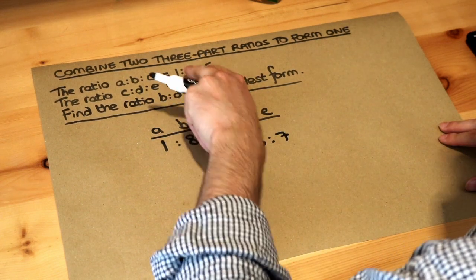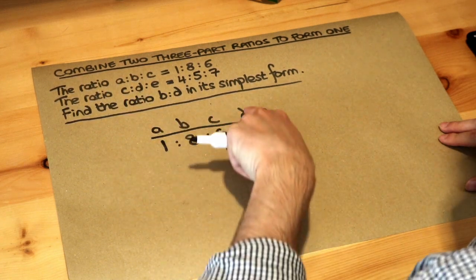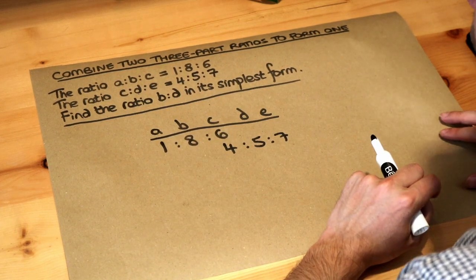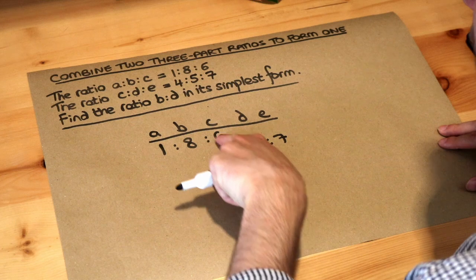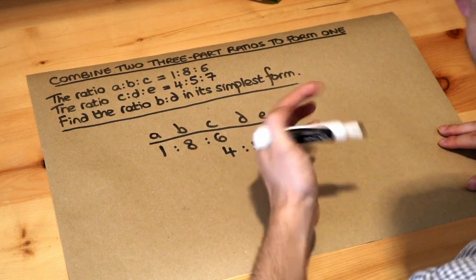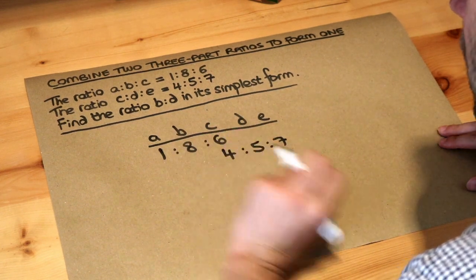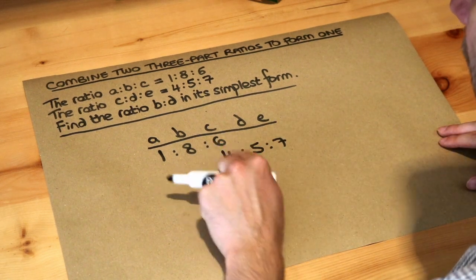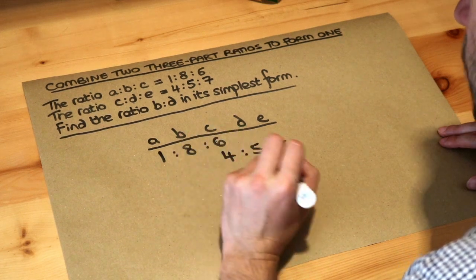I've arranged these two ratios so that we have consistent columns for the same variable — A, B, C, D, E. The way to combine them into a single ratio is that we need the two C parts to be consistent with each other. We scale ratios by multiplying by the same number in each part. So for 6 and 4, we need to work out what they both go into — and 6 and 4 both go into 12.